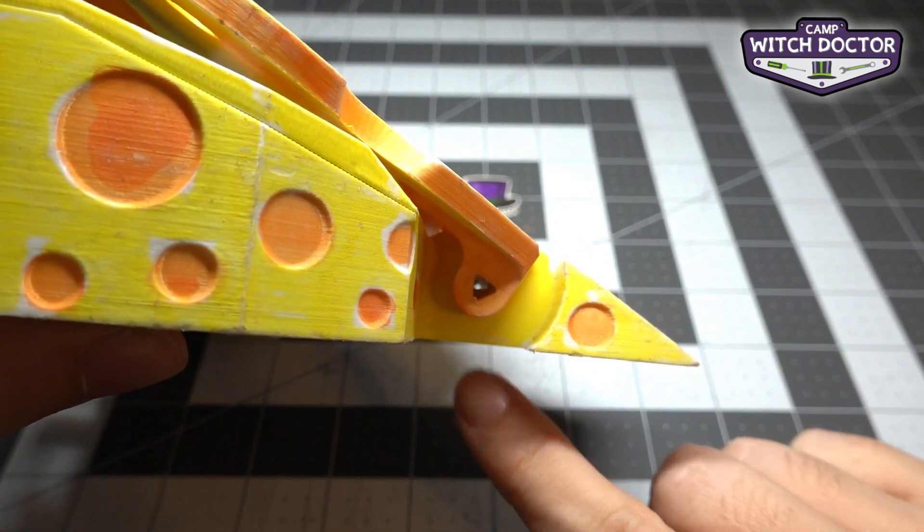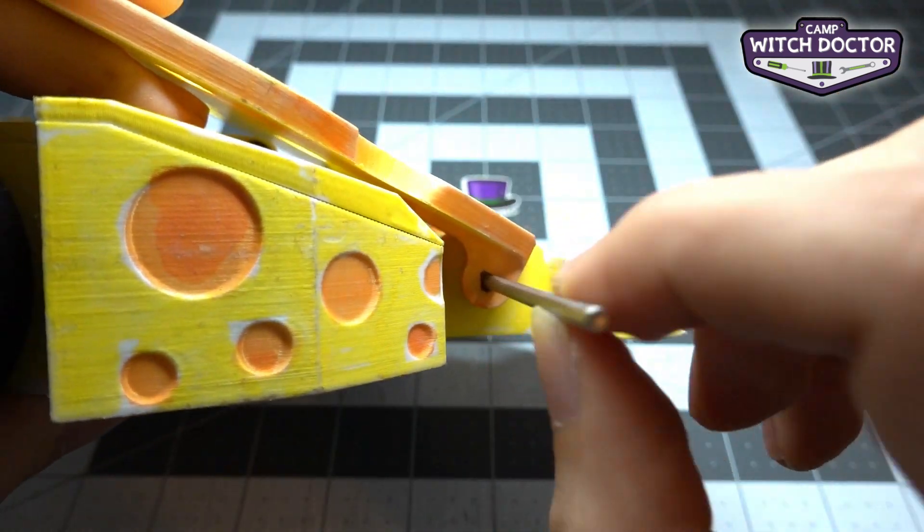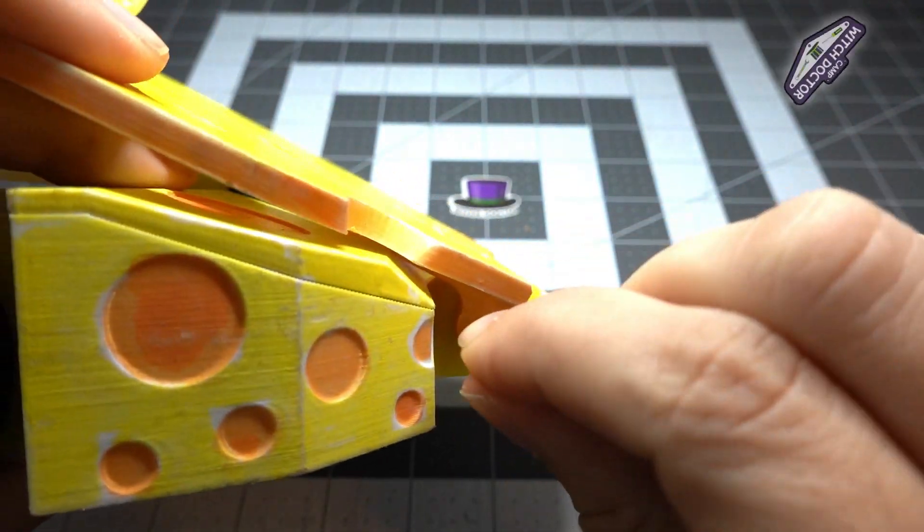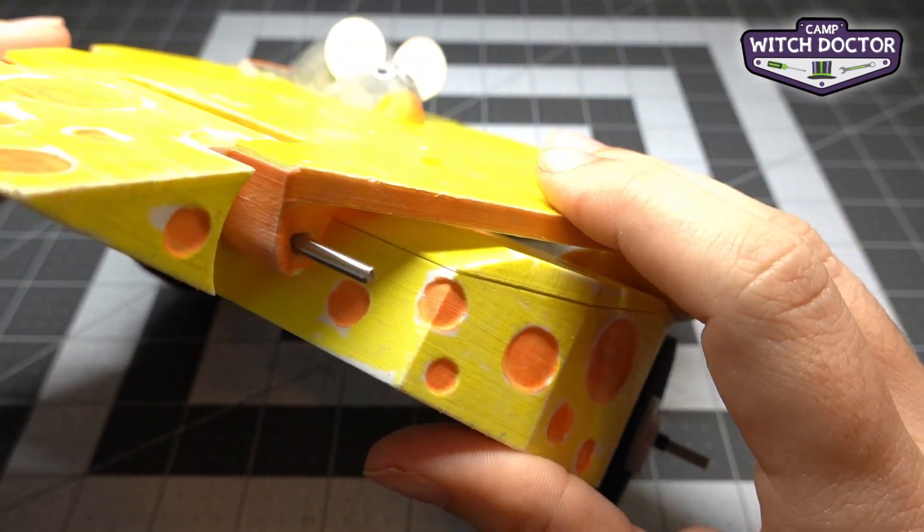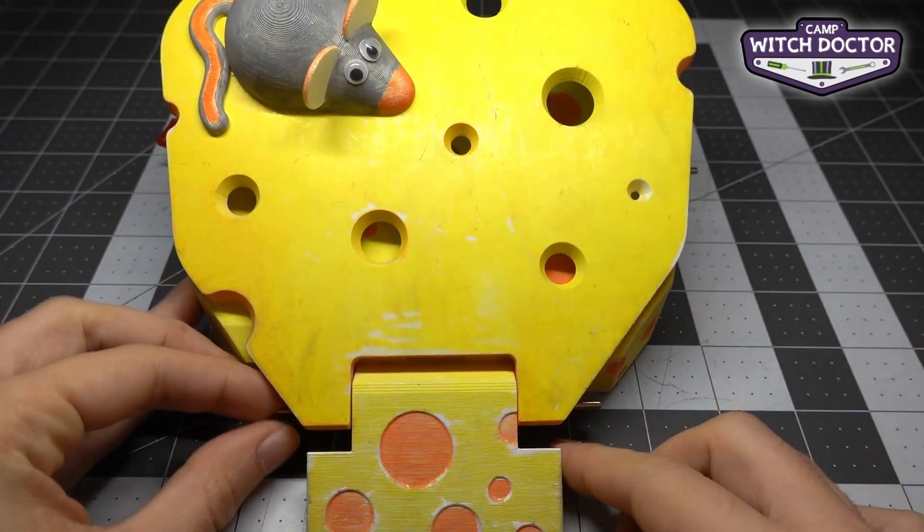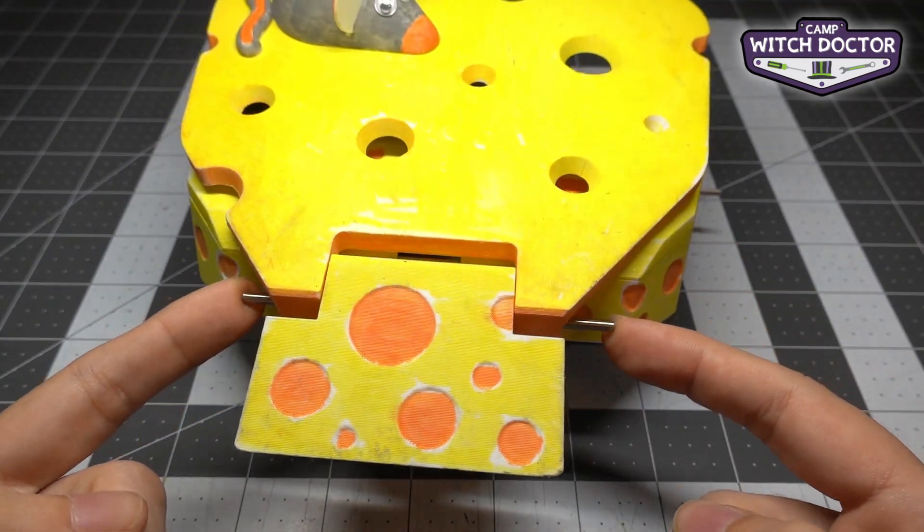So I'm aligning these holes right here. You can see a little bit of light all the way through. I'm going to take the shaft and I'm going to kind of wiggle it until it goes all the way through. It should look like this with a little bit of shaft sticking out both sides so we have some room to put the shaft collars on.